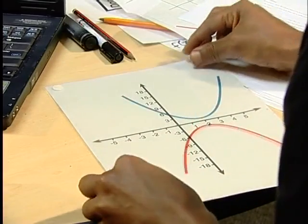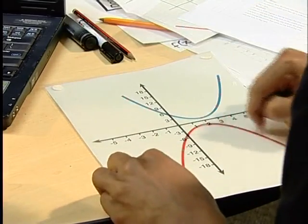First, with a reflection about the x-axis. So this is what I get. Each of the points has moved to below the x-axis.